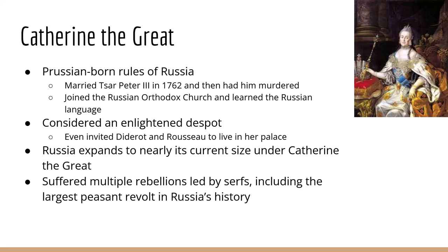Because of those conditions, Catherine the Great was able to come to power. She wasn't even Russian — she was from Prussia, a German citizen. She married Tsar Peter the Third in 1762, joined the Russian Orthodox Church, learned the Russian language, and then had her husband murdered to gain control of the government. She is an absolute monarch but is considered an enlightened despot. She invited Denis Diderot — creator of the encyclopedia — and Jean-Jacques Rousseau to live in her palace, and it's even said she was a lover of Diderot.